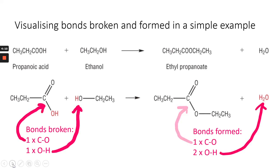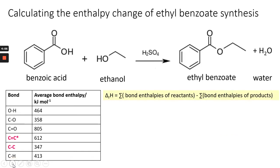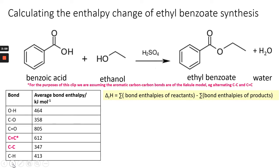So if we quickly point out the bonds that are broken and made, we can move on to the thermodynamics. Using bond enthalpies, we're going to take the aromatic ring to be the Kekulé structure, as shown in the structures on screen. The bond enthalpies for the actual pi delocalised model are slightly different, but for the purposes of matching the bonds in the graphic, I'm going to use alternating C double bond C and C single bond C.